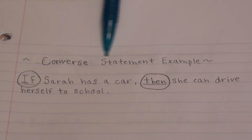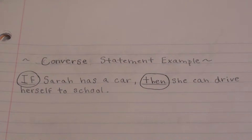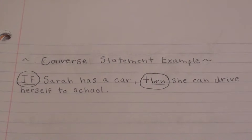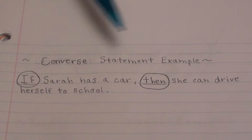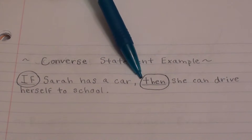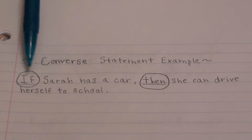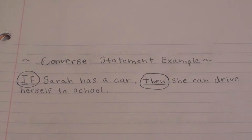The idea of a converse statement is basically when you flip the conditional statement around. Therefore, the hypothesis becomes the conclusion, and the conclusion becomes the hypothesis.